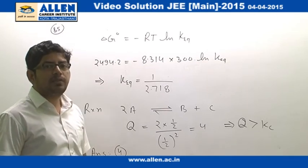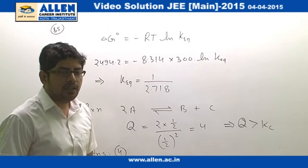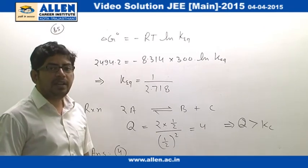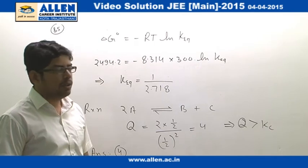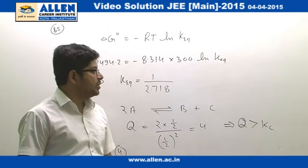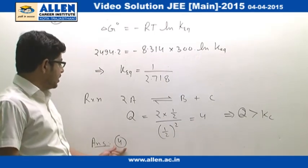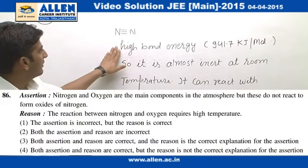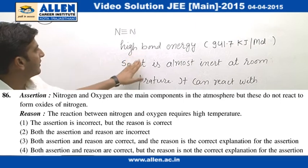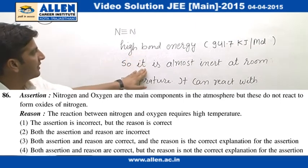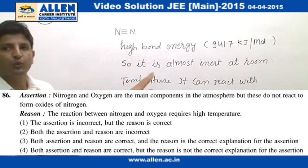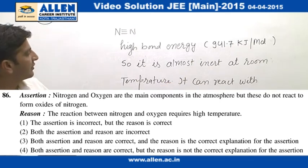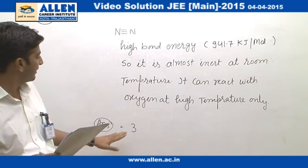Reaction ka equilibrium constant 1/2.718 aa raha hai, jo 1 se kam hai. Yeh dikhata hai ki reaction backward direction mein proceed karni chahiye. N₂ molecule ki high bond energy hone ki wajah se yeh room temperature pe practically inert hai. O₂ reaction nahi kar paayega, aur agar high temperature pe karaaya jaaye toh answer 3 aayega.